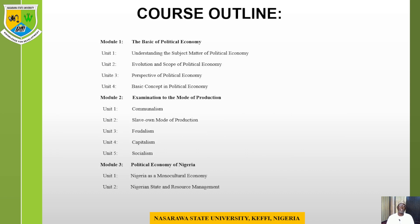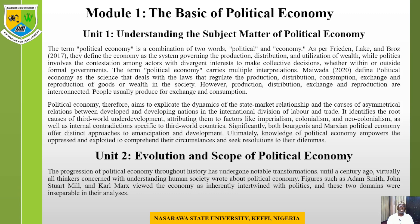Let me give you the course outline. Module One covers basic concepts of political economy: understanding the subject matter, evolution of political economy, perspectives of political economy, and basic concepts. Module Two examines modes of production: communalism, slave-owned, feudal, capitalism, socialism. Module Three looks at the economy of Nigeria, Nigeria as a monocultural economy, and Nigerian state resource management.